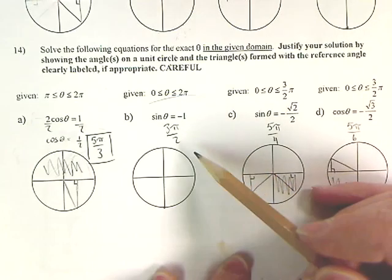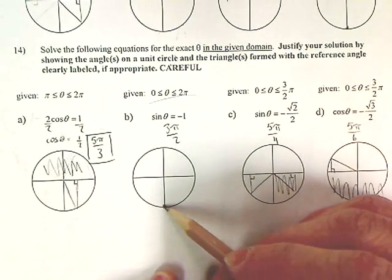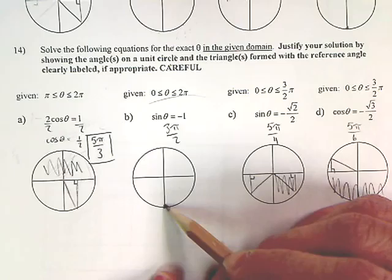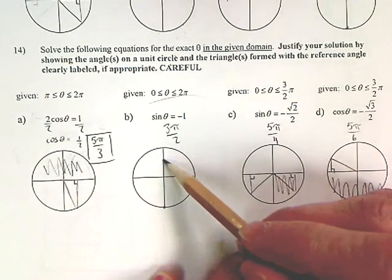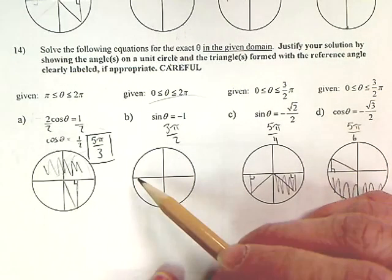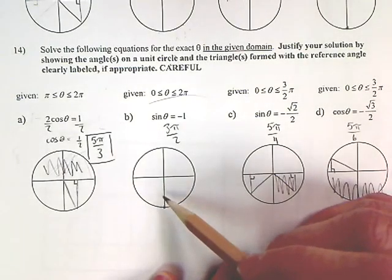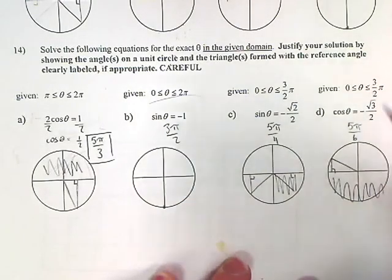Sin of negative 1 is down here. So this is π/2, this is π, and this is 3π/2. So we've got 3π down here.